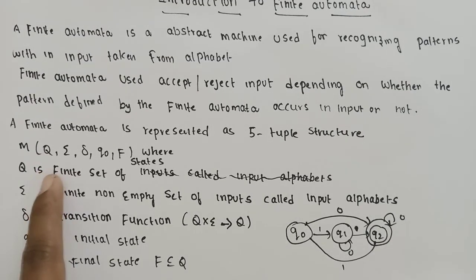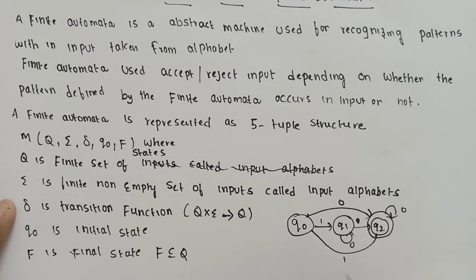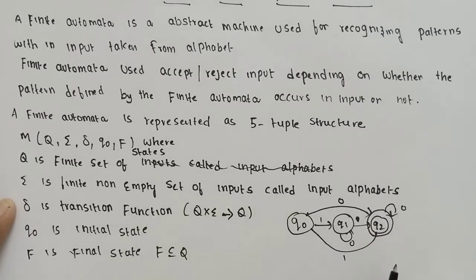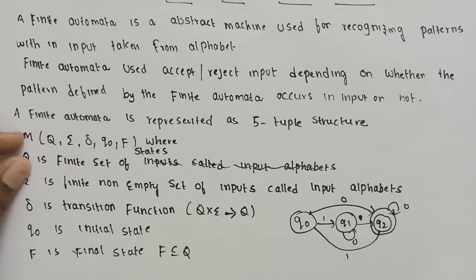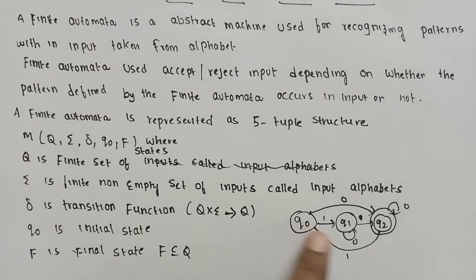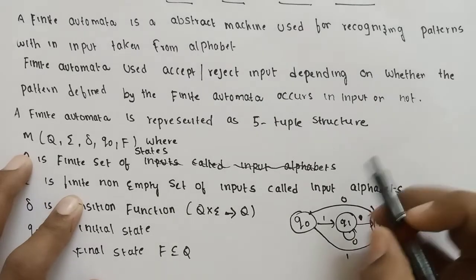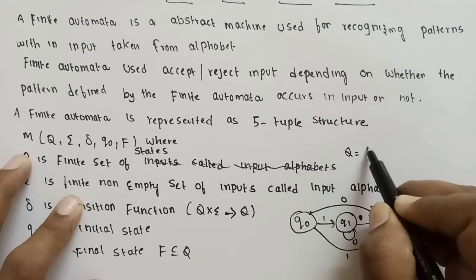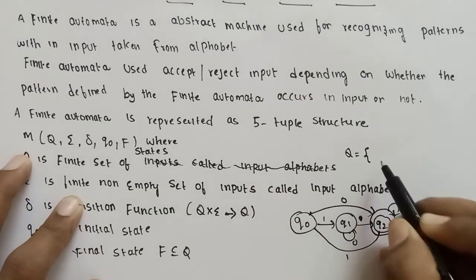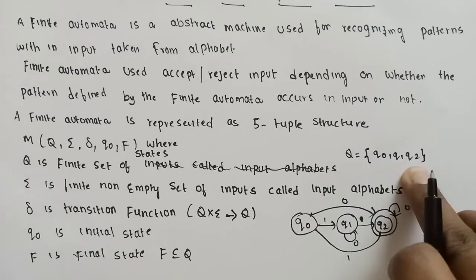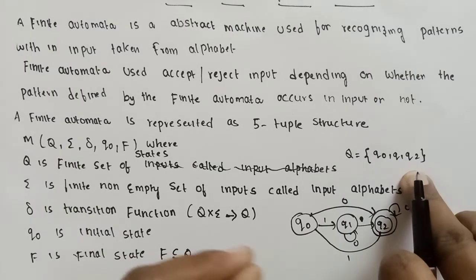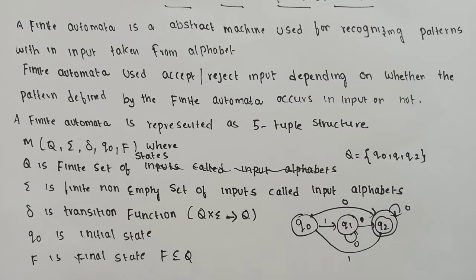Q is a finite set of states. For example, in a particular Finite Automata, Q is equal to the finite set of states, which may include Q0, Q1, and Q2. So Q represents the finite set of all states in the Finite Automata.